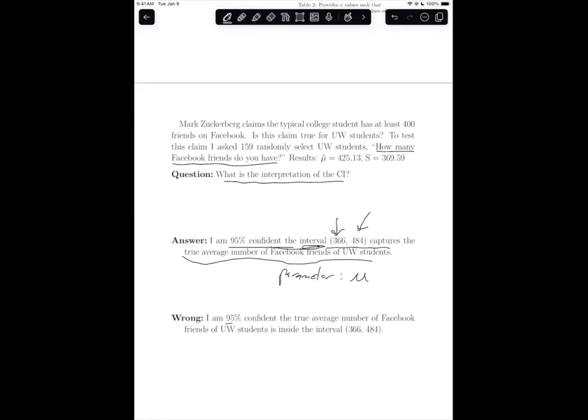Where down here, this is saying I'm confident and here is the parameter is inside the interval. We have no confidence or uncertainty about the parameter. We only have confidence, uncertainty about what the interval is doing. And so that's why talking about the parameter being inside the interval is incorrect. We talk about the interval capturing or captures the parameter, or in this case, the true average number of Facebook friends of UW students.